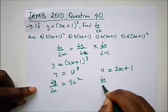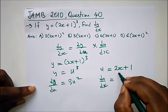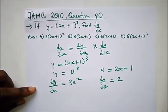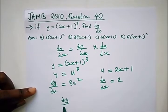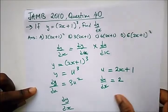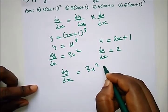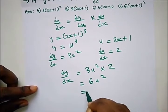and du/dx = 2. So dy/dx gives us 3u² multiplied by 2, which equals 6u². And what is u?